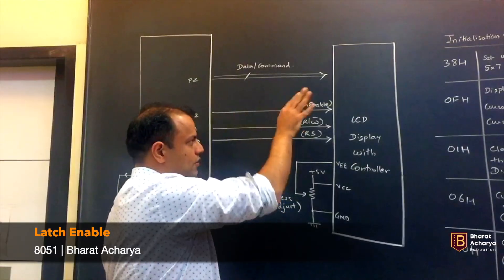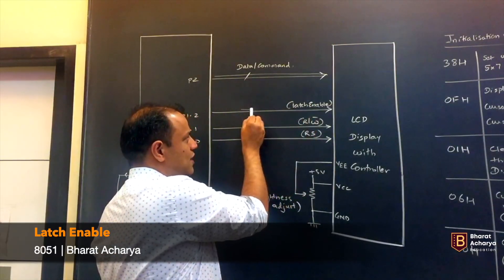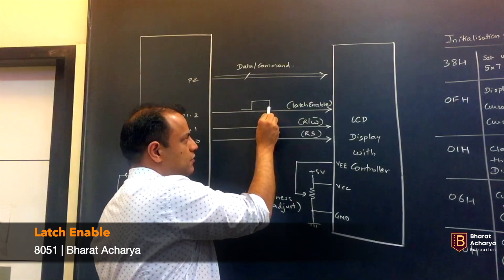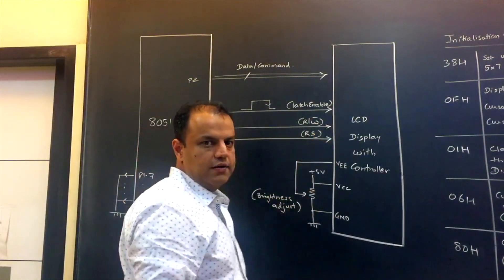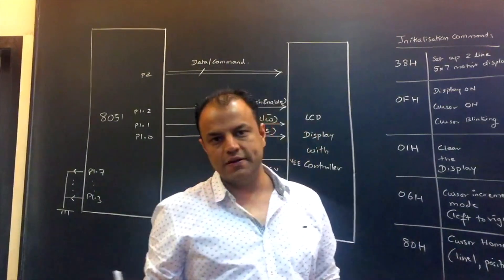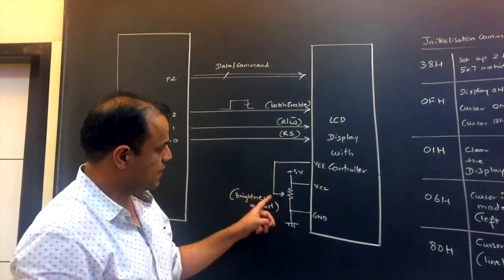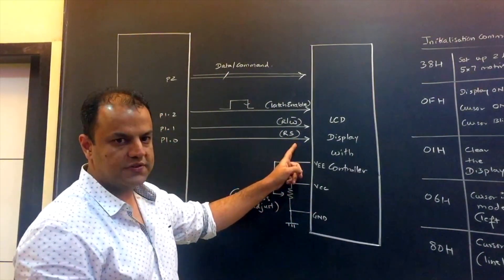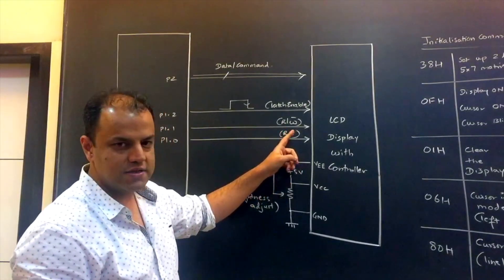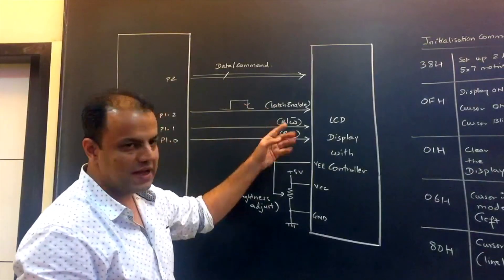Now whether you send a data or a command, you have to latch it. Just like the A to D converter, you need to latch it. So latch enable should be turned 1 and then turn 0. This action latches whatever you send. It captures whatever you send, whether you send data or command.